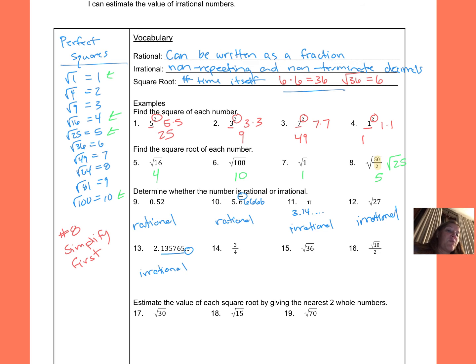Number 14, we said if it can be written as a fraction, then that is rational. If I turn that into a decimal, it would be 0.75. Number 15, well that's on my list over here. Square root of 36 is 6, and 6 is a whole number, so that's going to be rational.